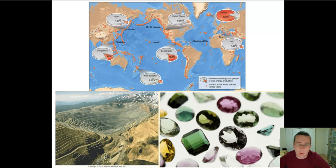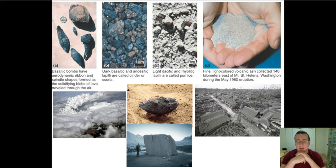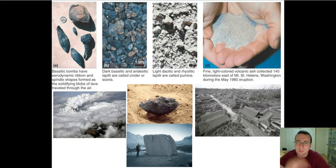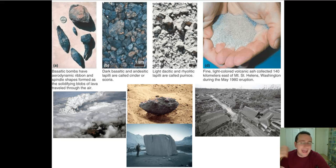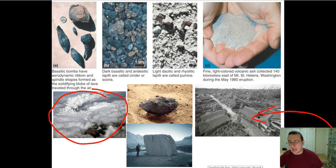Another interesting feature of explosive eruptions is that they produce pyroclastic materials. The tiniest materials — called fine volcanic ash or volcanic dust — are particles less than 0.25 millimeters in diameter. As they get a little bigger, up to 2 millimeters, we call them volcanic ash. An ash cloud will spread ash and dust across the surface and cause complete coverage with ash, as you can see in these images.